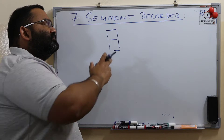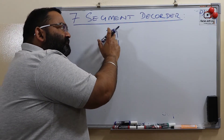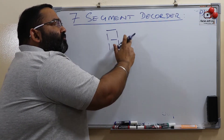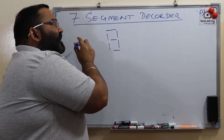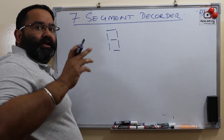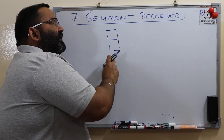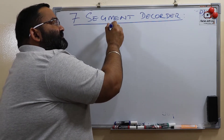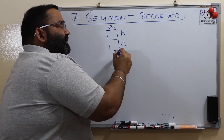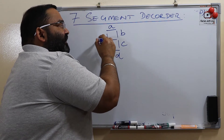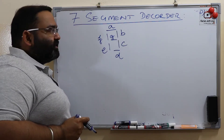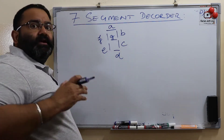In these displays, we have 7 segments. They are arranged in the format of 8. Each segment has a name: this is segment A, B, C, D, E, F, and G.